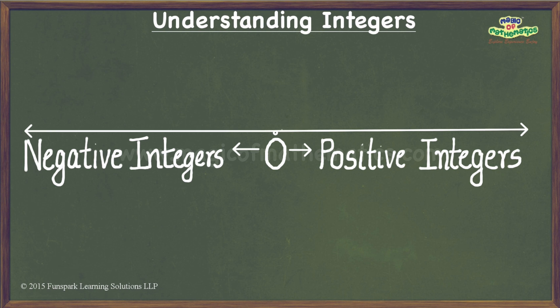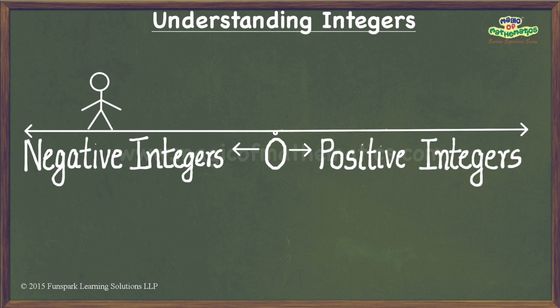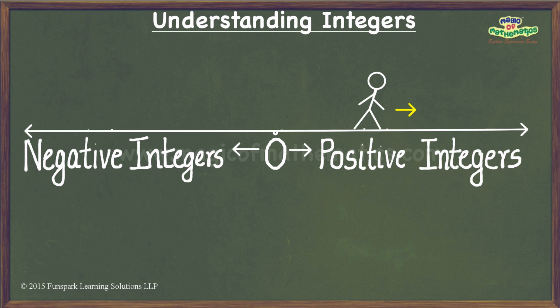For starting the number line walk, I look at the first operand to determine the starting point. The starting point could be on the positive part or on the negative part of the number line, determined by the first operand. For now, let us look at the case where the first operand is a positive integer, which means I will stand at a point on the positive part of the number line as shown. Next, I look at the operator. If it is an addition operator, I turn to walk towards the right as shown. And if it is a subtraction operator, I turn to walk towards the left.